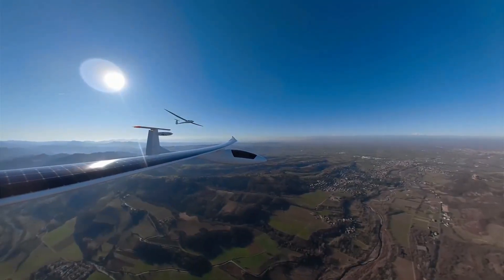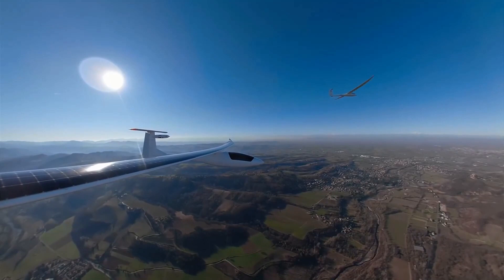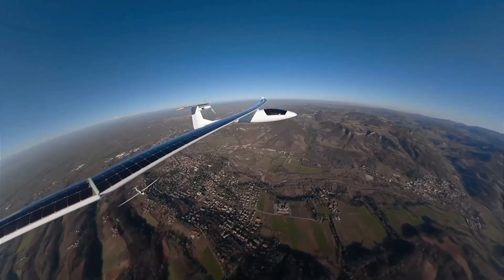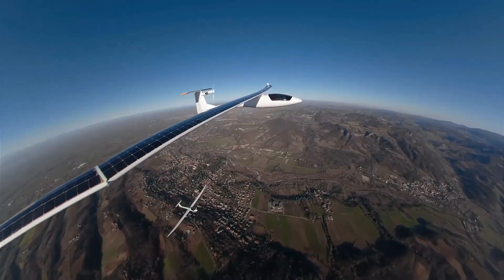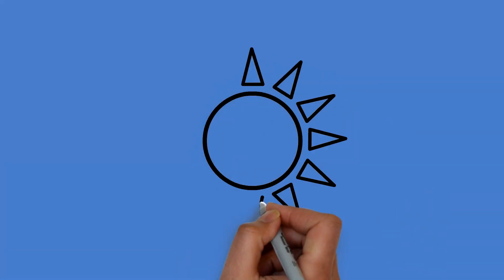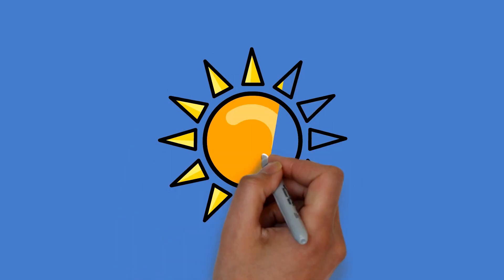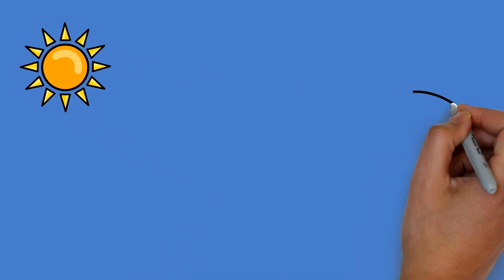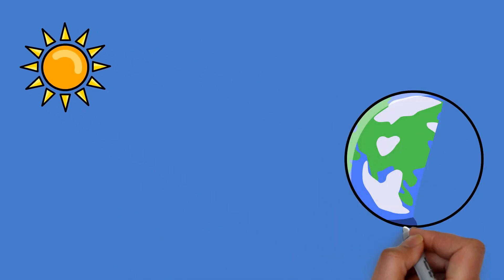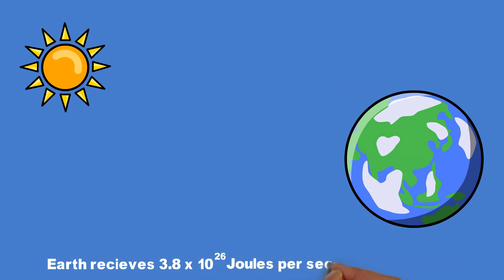But before we discuss them let's go to the drawing board and learn the relationship between the sun, the surface area of the aircraft and the power requirements. One of the most interesting facts about solar energy is that the amount of it landing on the earth in just one hour is more than what all human beings consume during an entire year. Hence there's no question about its abundance.